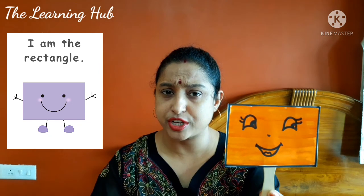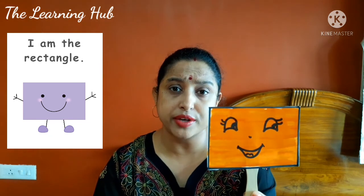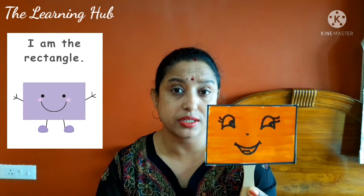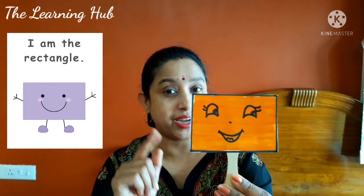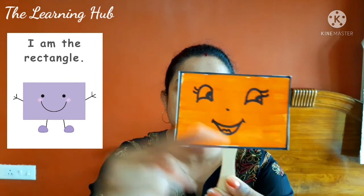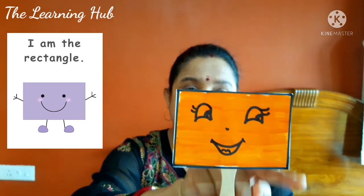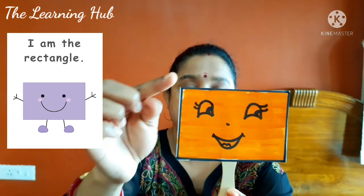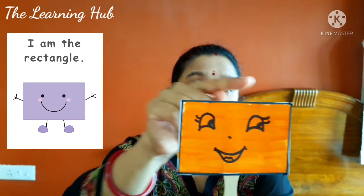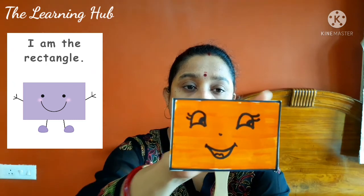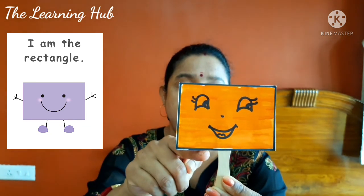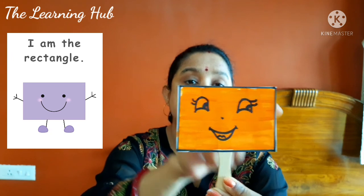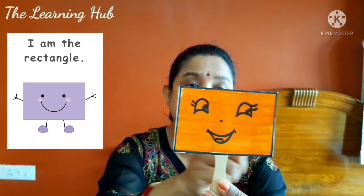But what is the difference between square and rectangle? Because square also has four sides and four corners. The difference is that rectangle has four sides but two sides are long and two sides are short. Opposite sides are equal.